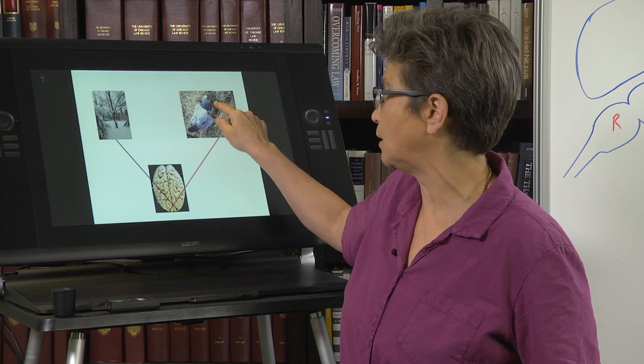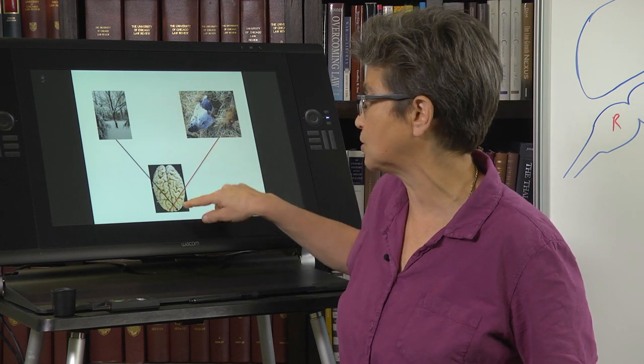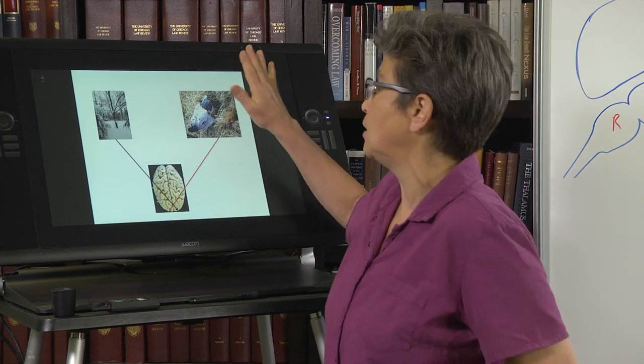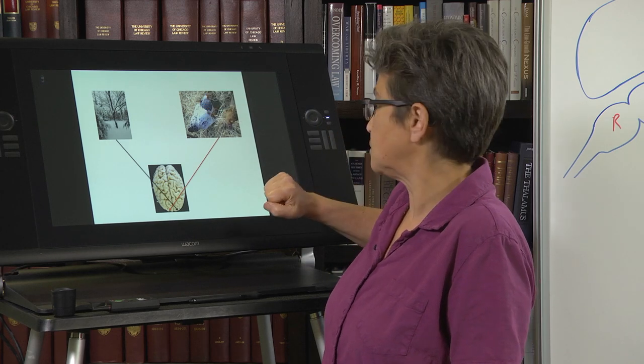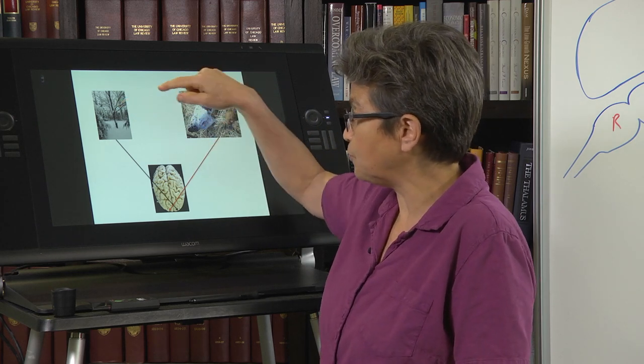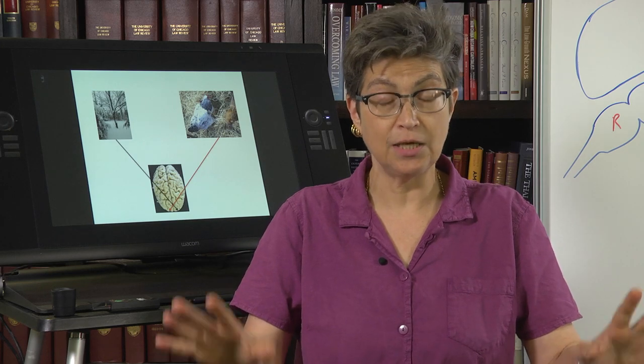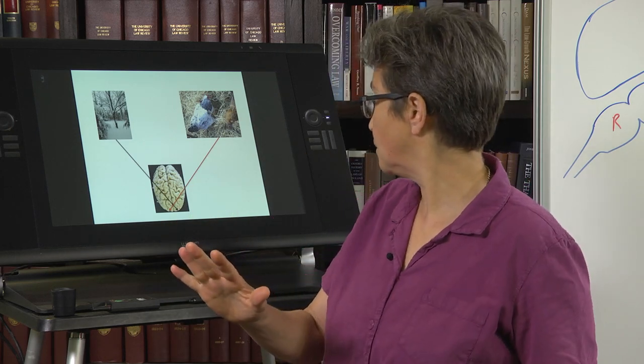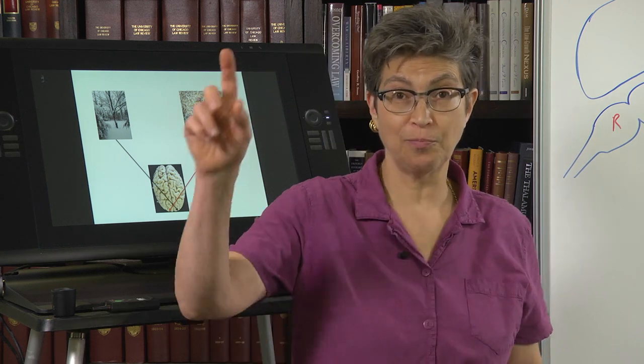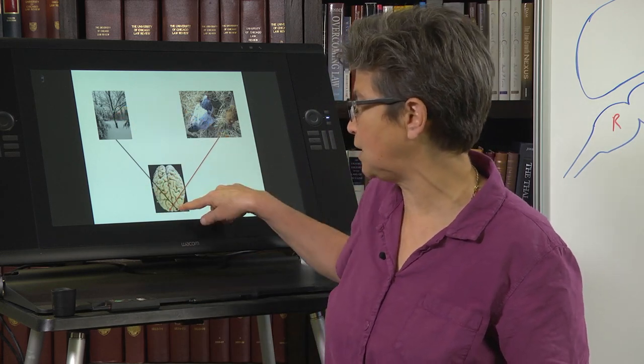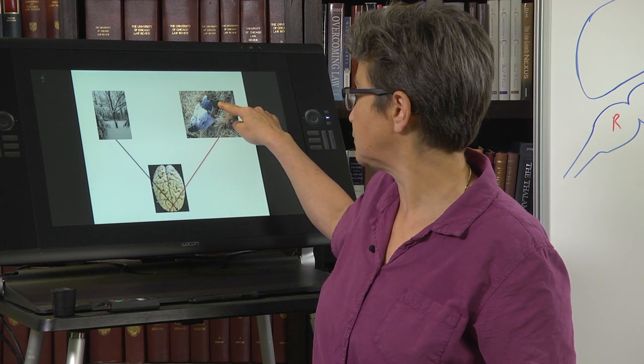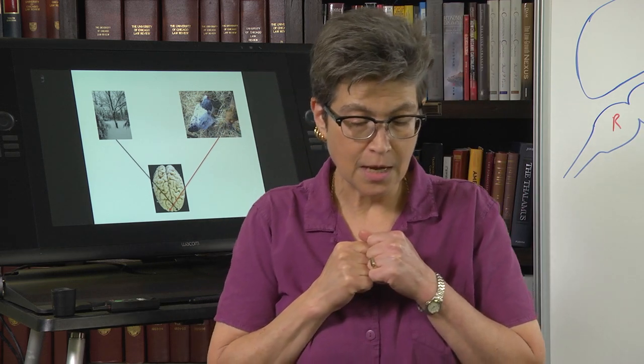So let's say that we present to the left brain chickens, a picture of chickens. And to the right brain, we present a snow scene. And now we say, we take those pictures off and we ask the person to point with their left or the right hand to what they saw. Well, with their left hand, they're going to point to a chicken. And with their right hand, they're going to point to a snow shovel. Those are the choices that they get. So the right hemisphere is seeing a snow scene. It points to a snow shovel. The left hemisphere is seeing a chicken. It points to a chicken.